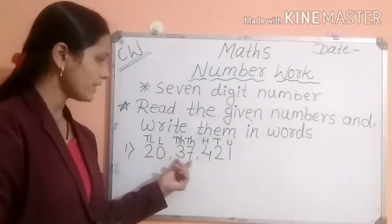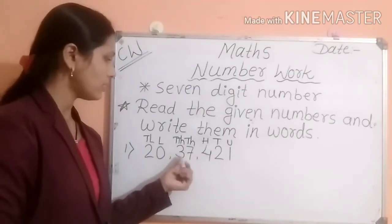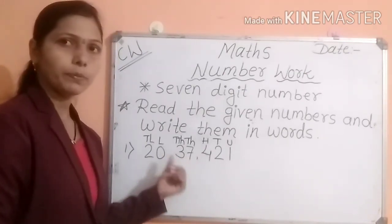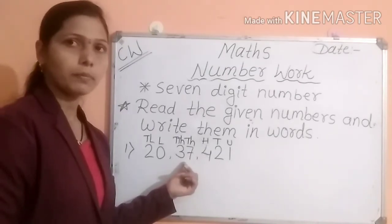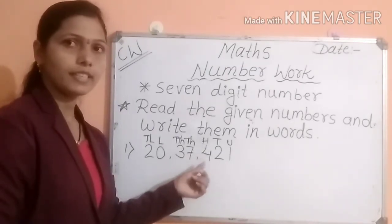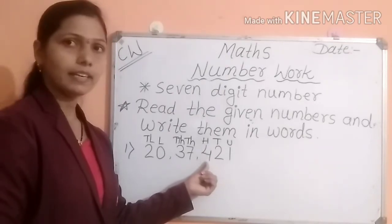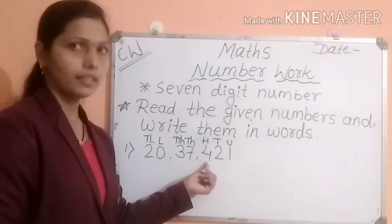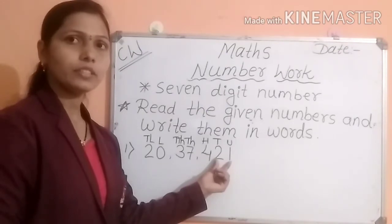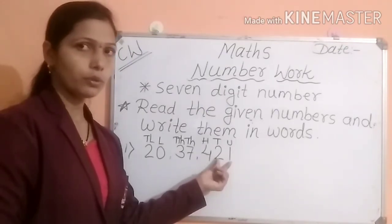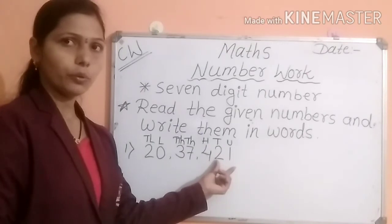Which number can you see here? Thirty-seven. In which family? Thousand family. So thirty-seven thousand. Here, separately, four hundred. And tens and units you have to read together — twenty-one.